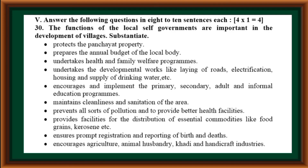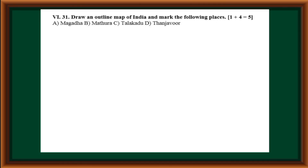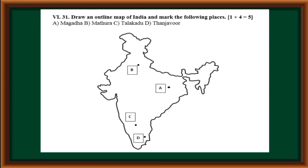Any eight points should be written. Sixth main, question number 31: Draw an outline map of India and mark the following places — one mark for drawing the map, four marks for location of places. Places: (A) Magada, (B) Mathura, (C) Talakadu, (D) Thanjavur.